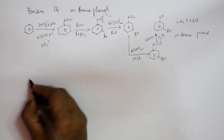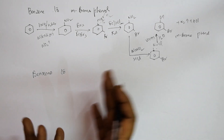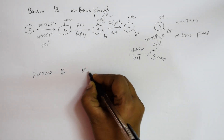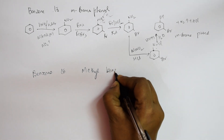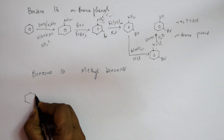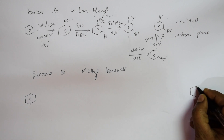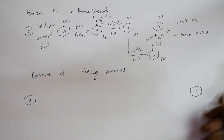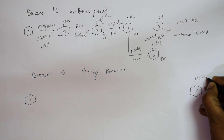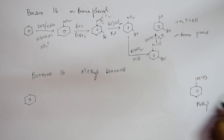Now let's see the next type of reaction — they've asked me to convert benzene to methyl benzoate. Let me write the formula: benzene ring with a benzoate group. Methyl benzoate means the ester group is COO with a methyl group attached.